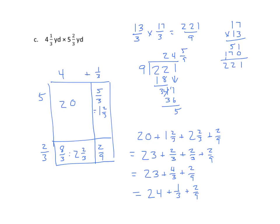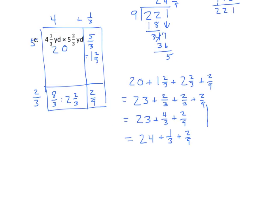We can easily convert our 1 third into ninths. So I have 24 plus, 3 times 3 is ninths, 1 third becomes 3 ninths plus 2 ninths equals 24 and 5 ninths. And of course, we should have our unit yards squared.